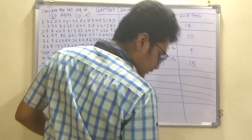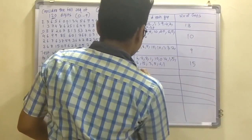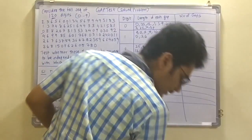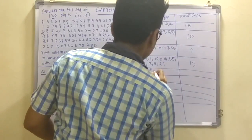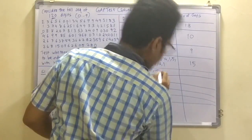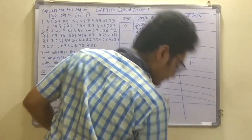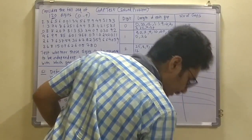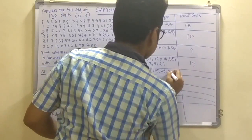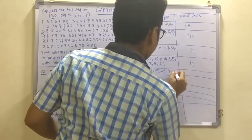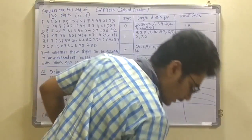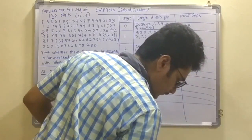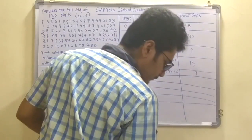For digit 4, the gap lengths are: 6, 16, 9, 11, 15, 22, 8, 11, 6. The total number of gaps for digit 4 is 9.